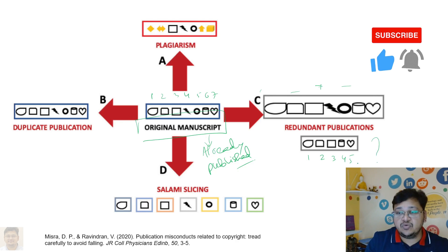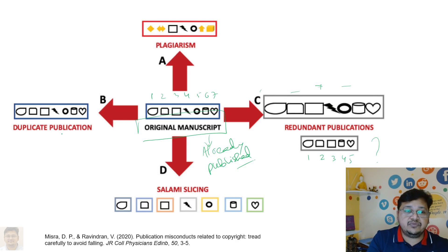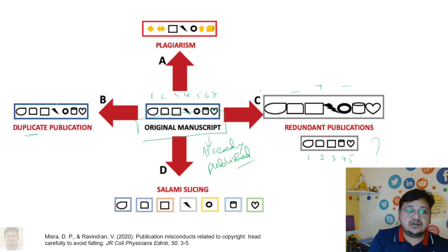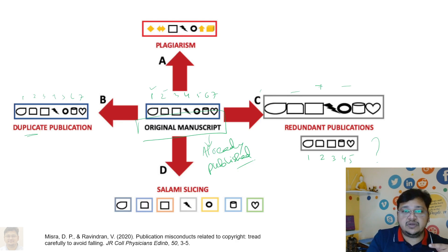When the next publication is published, it will overlap with the already published article, so that is to be avoided. Similarly, in category B — duplicate publication — all seven components are simply copied, like a clone. All seven components are intact, so this is a duplicate publication.